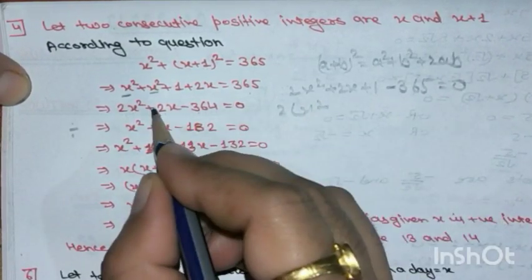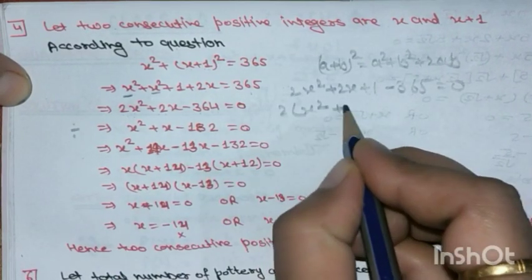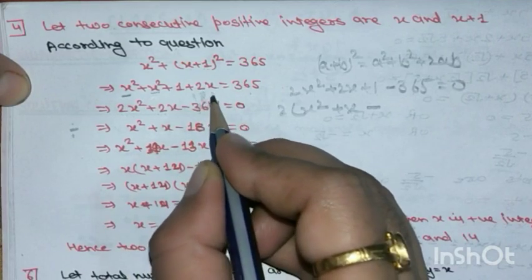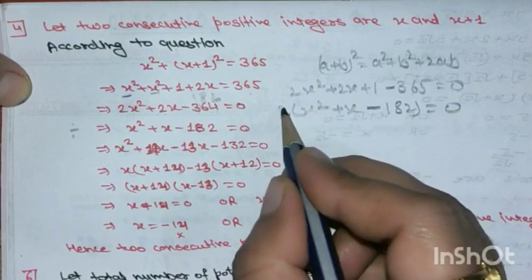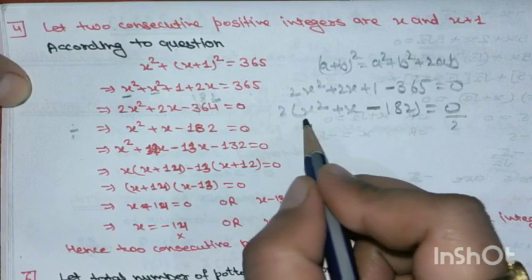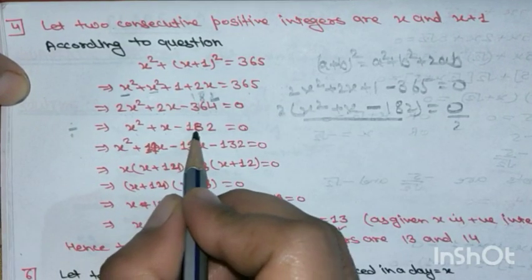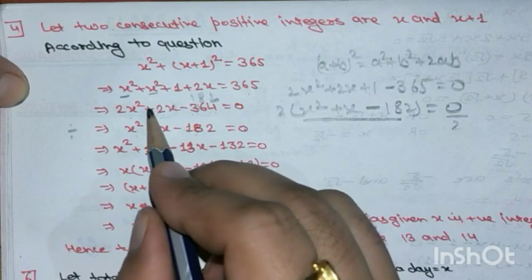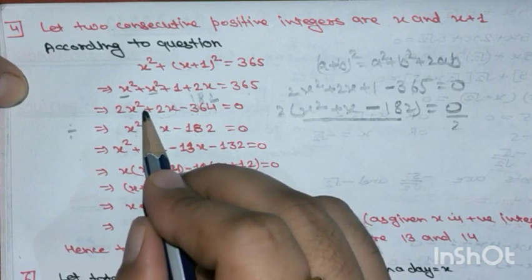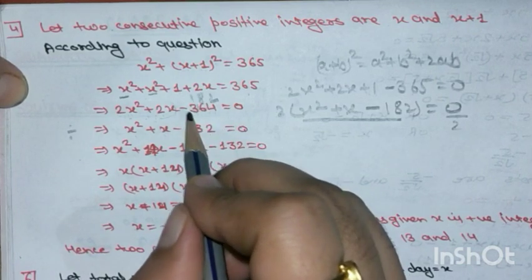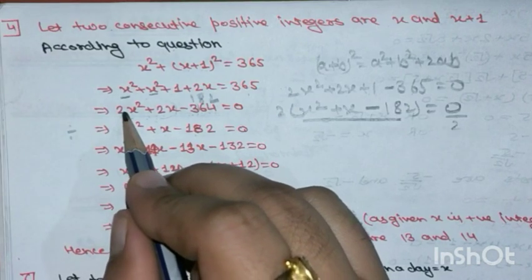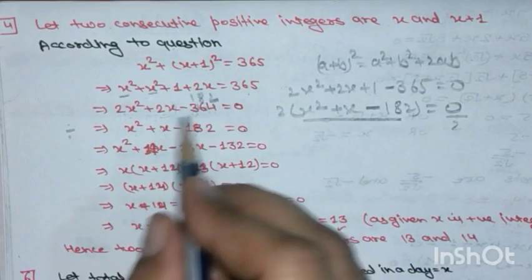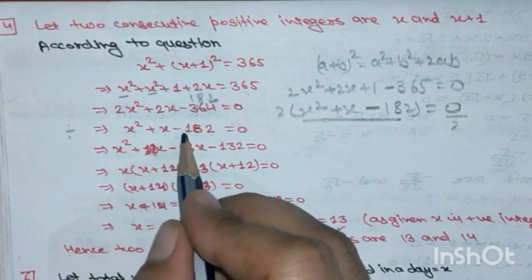Now solve x² + x - 182 = 0. We need to split +1x into two parts: one plus and one minus (since middle is plus and last is minus, factors have opposite signs). Factorizing 182: 2 × 7 × 13. We need factors that differ by 1: trying 14 and 13 — 14 - 13 = 1 ✓. So take +14x and -13x.